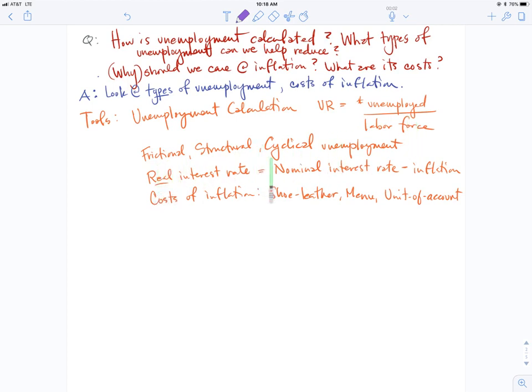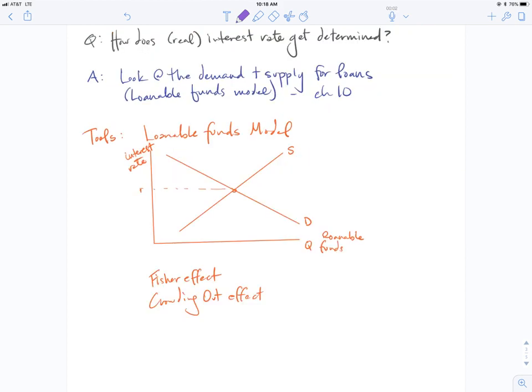Then the calculation of the real interest rate, which is always just found by subtracting inflation from the nominal interest rate. That equation can be rearranged. Listing the three costs of inflation, and then in our march towards understanding the movement and the different key variables in the economy, interest rate is a pretty key variable.